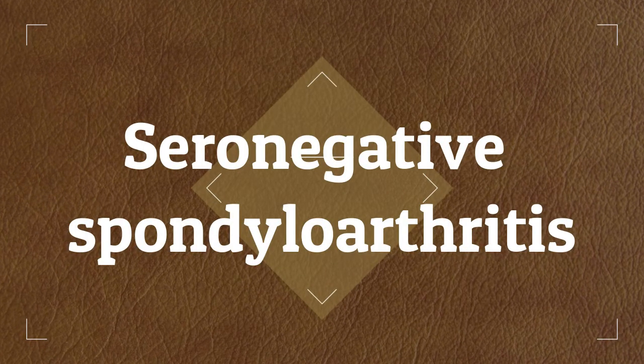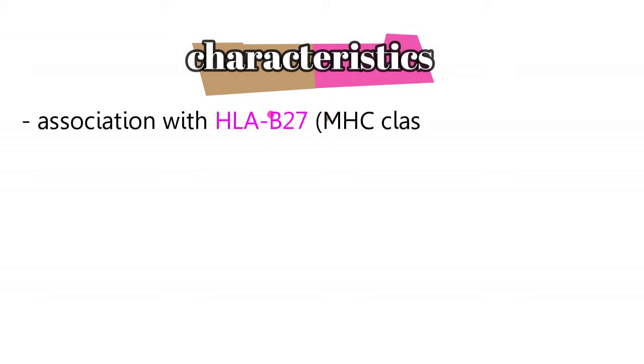Welcome back. In this video we'll be talking about seronegative spondyloarthritis. These diseases got their name 'seronegative' from the fact that they have no specific markers in the blood that we can look for to diagnose them. However, they do have a gene that, if present, is highly characteristic of this disease — and that gene is HLA-B27, which is a class of MHC-I.